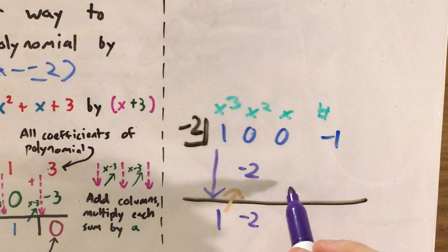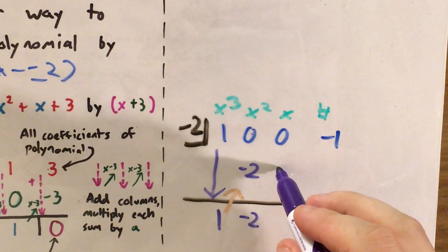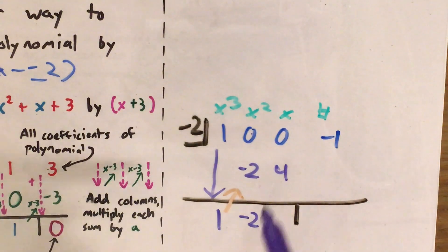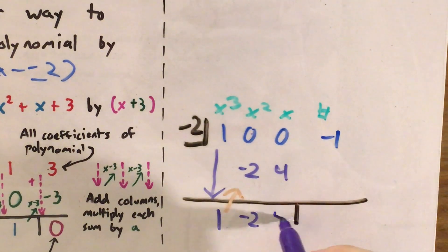I'll go diagonal again and multiply by negative 2. Negative 2 times negative 2 gives me positive 4. And then I add, going down the column, 0 plus 4 equals 4.